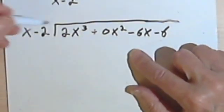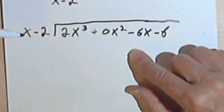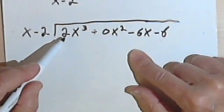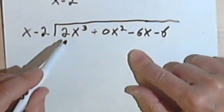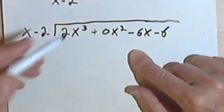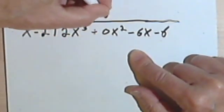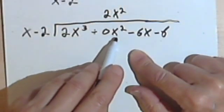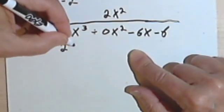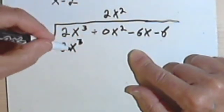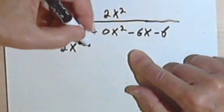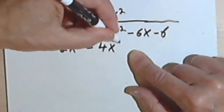So we're going to go through this process over and over again. I take the first term here in my divisor, divide it into the first term that I see here. So x divided into 2x to the third is going to give me 2x squared. So I'll place that over my x squared term. 2x squared times x gives me 2x to the third. These match, so things are good. Then I've got 2x squared times negative 2 is going to give me a negative 4x squared.